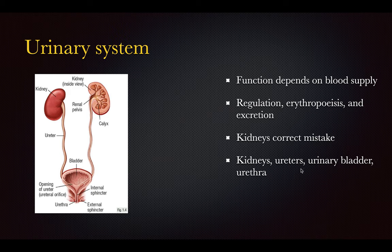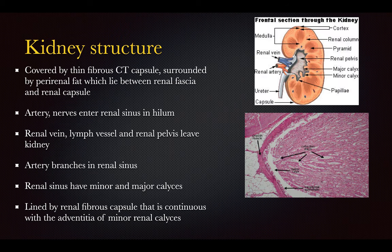The urinary system is composed of the kidneys, the ureters, the urinary bladder, and the urethra. The kidney is covered by a thin fibrous connective tissue capsule and surrounded by quite a bit of fat. The perirenal fat is around the kidney, and there is also some adipose tissue between the capsule and the kidney itself.